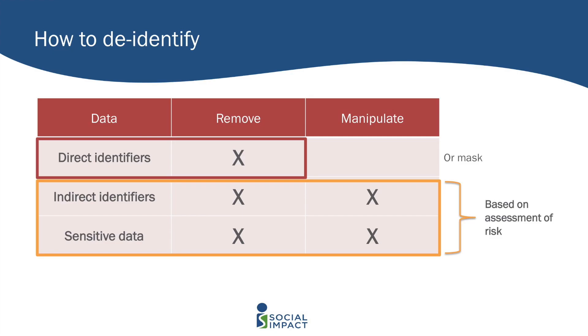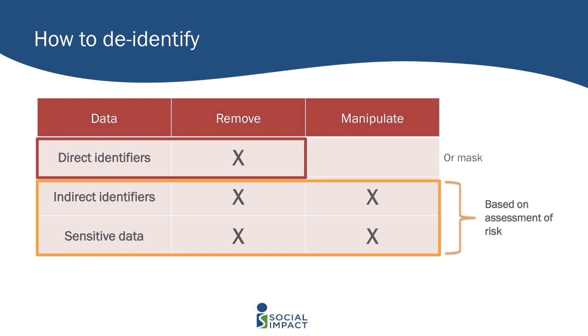For direct identifiers, for the most part we're just removing or masking them. In cases where a category is important — like if you have address information and want to keep a higher level of geographic information — you may mask lower levels with different information to obscure it. For indirect identifiers and sensitive data, there's a gray area: you might decide to remove or manipulate them, probably skewed toward manipulating. The degree to which you do so is based on your assessment of the risk. It's really incumbent on the researcher to understand what other data exists that could be linked to yours, who has access, what their motivations might be, what means and ability they have to do this linkage, and what could possibly happen to respondents if it were re-identified.